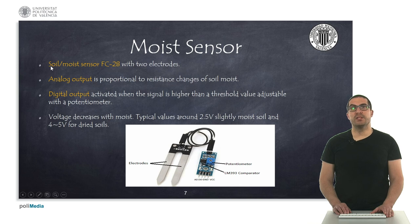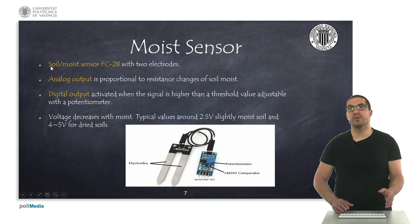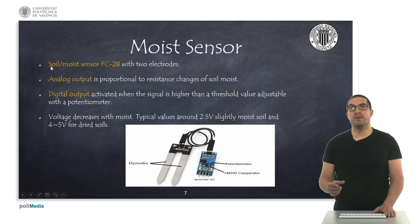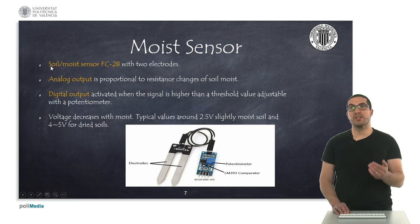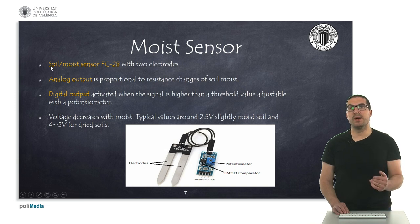Then we have the moisture sensor. We use this sensor to measure the humidity of the soil, and it provides an analog output that is proportional to the resistance changes of the soil moisture. Together with the provided electronics, we also have a digital output with a potentiometer that we can adjust. There is an analog comparator in which we can set a threshold, and then we can use this digital output so that whenever the humidity is above or below that value, the digital output will be high or low correspondingly.